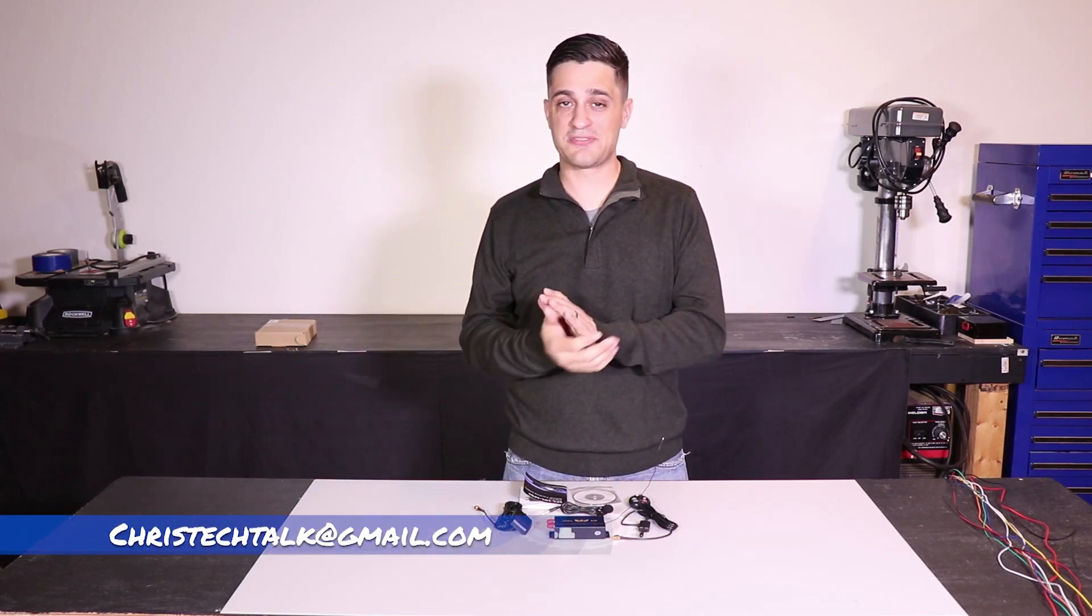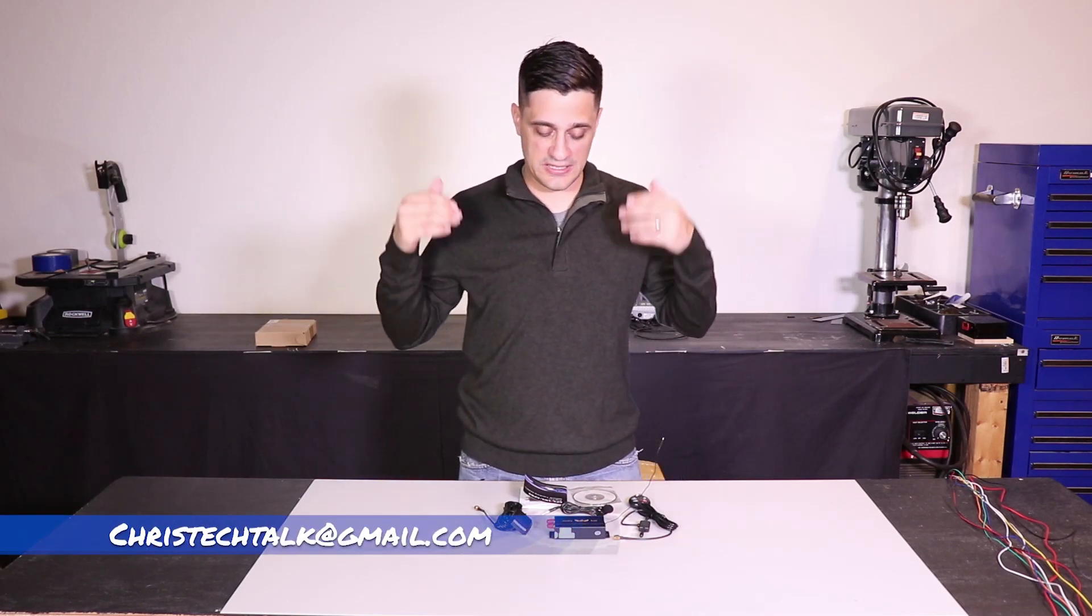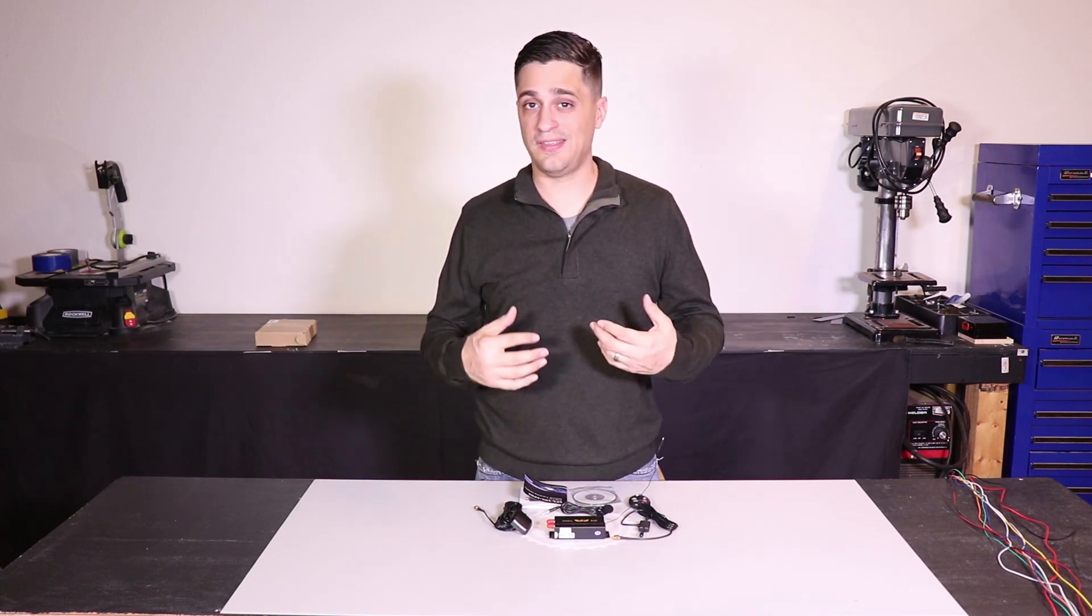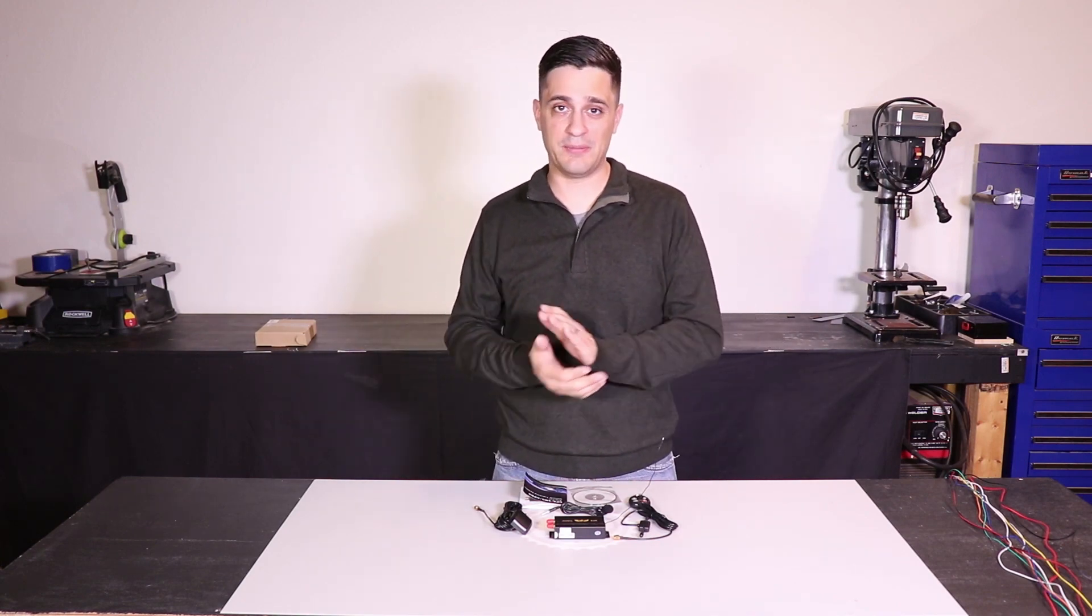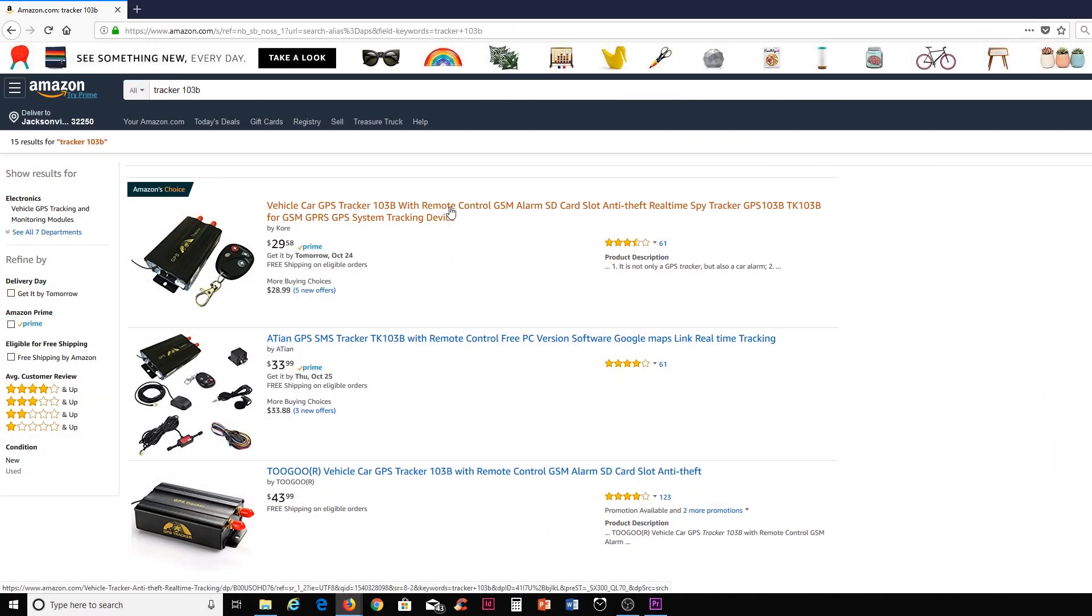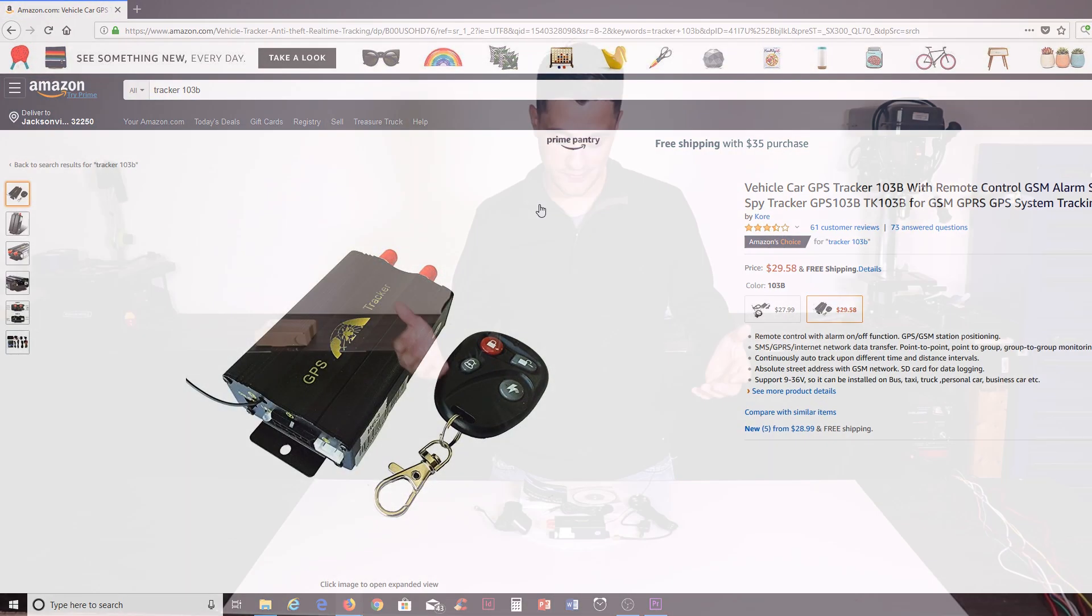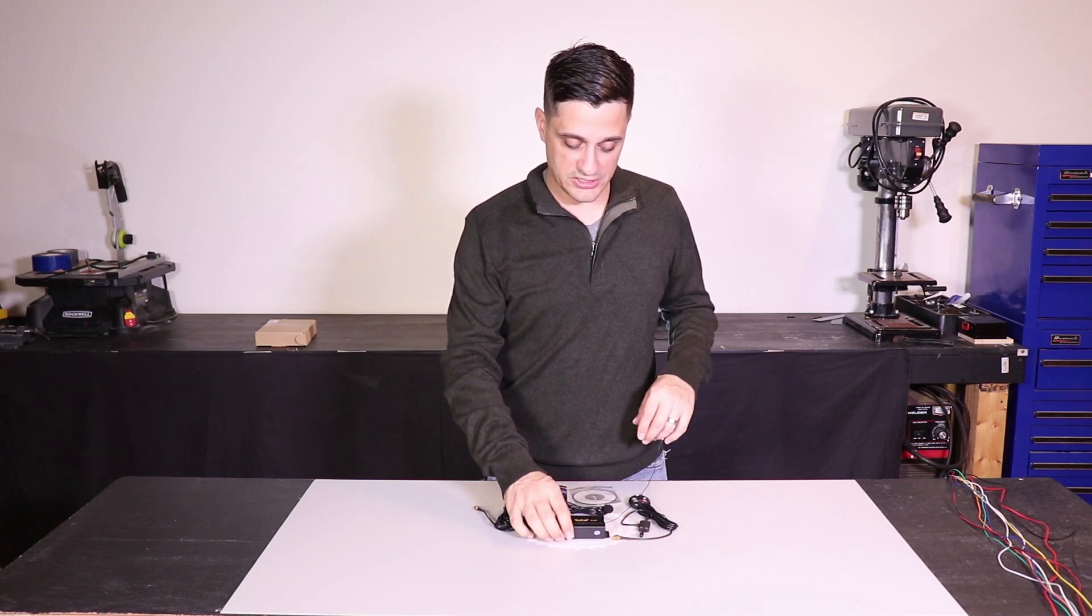Hey everyone, it's Chris here. As always, thanks for coming to check out the video. So today's video, I'm going to be testing a GPS tracker. This is a $30 tracker that you can buy off Amazon, and it's referred to on Amazon as a 103B or a TK103B. So again, it's $30. It's a pretty neat GPS tracker.